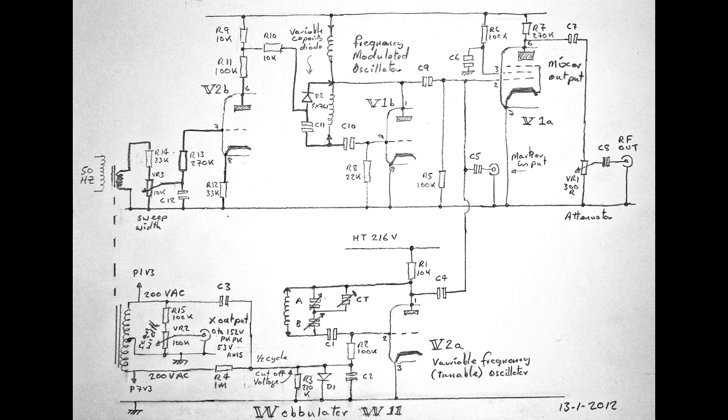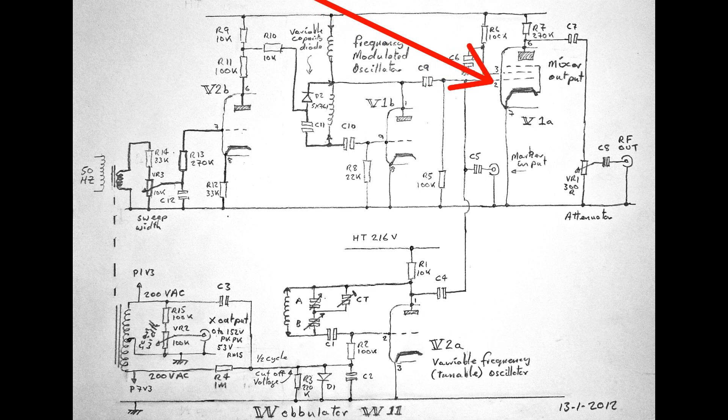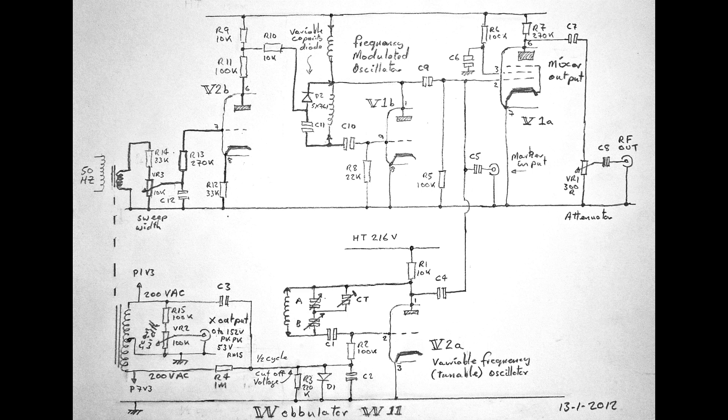So finally, turning back to my circuit, you can see that the output of that variable frequency oscillator is fed up onto the grid of the mixer and output valve. And that signal is going to be mixed with the output from the frequency modulator valve, and the output is going to come from the anode of the mixer output valve and be fed via the attenuator through to the RF output. And what we'll get, of course, is the difference between those two frequencies.